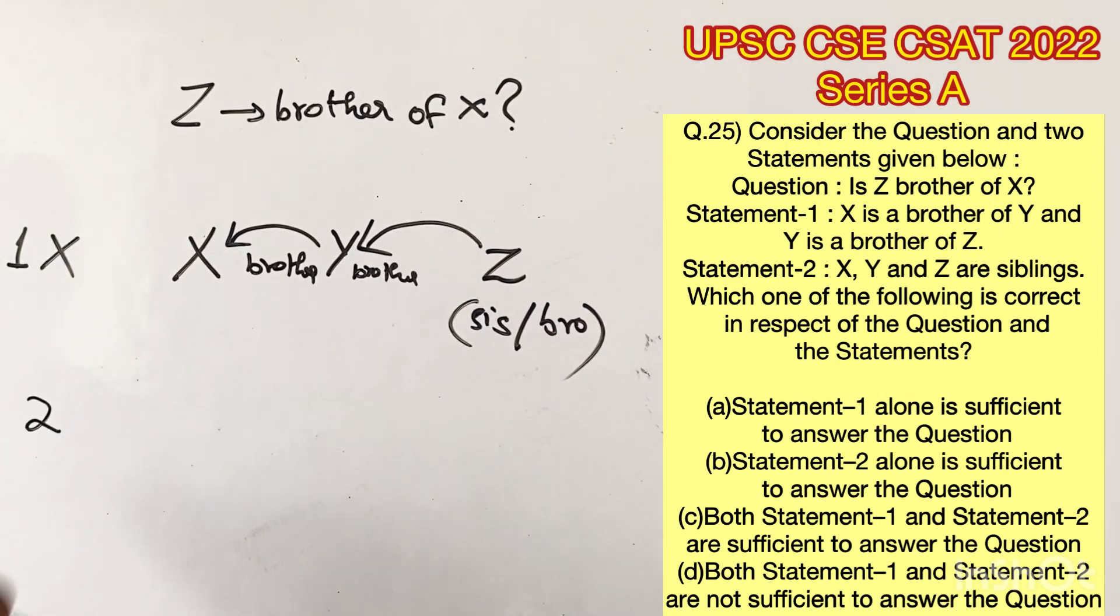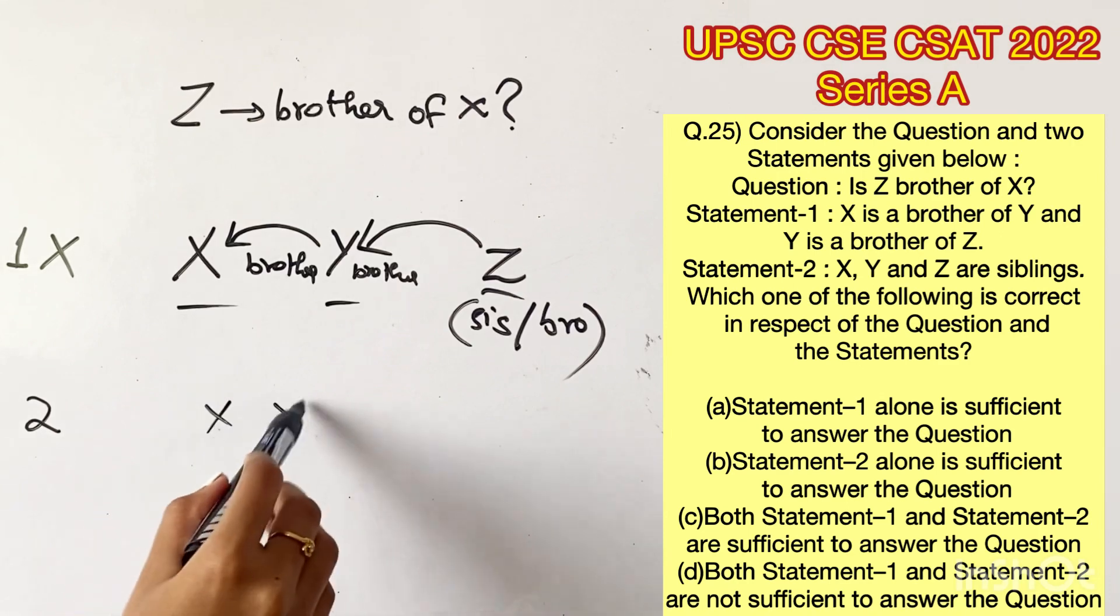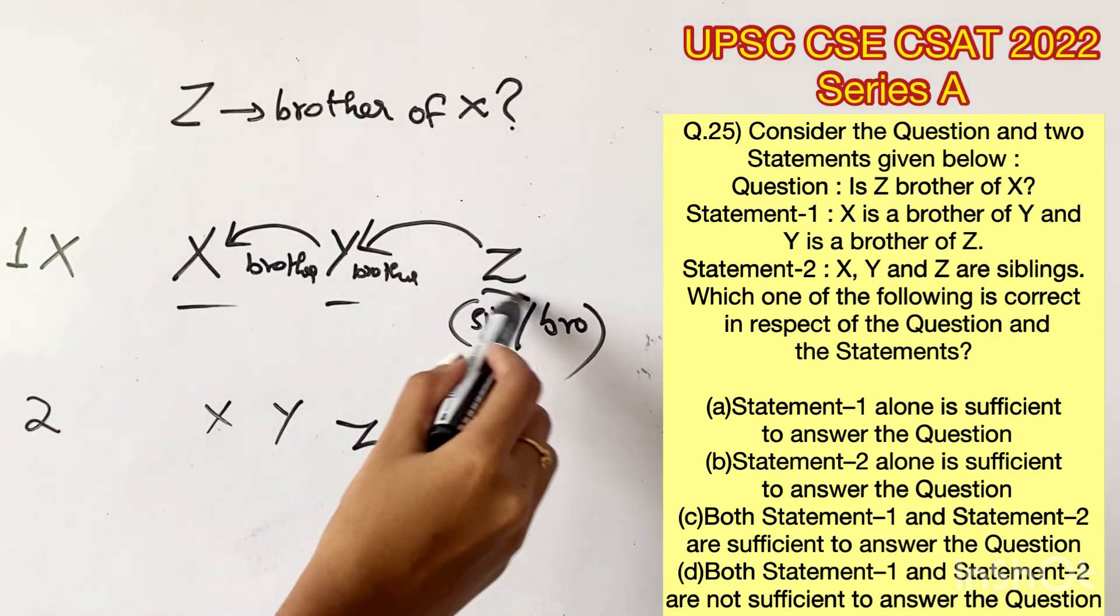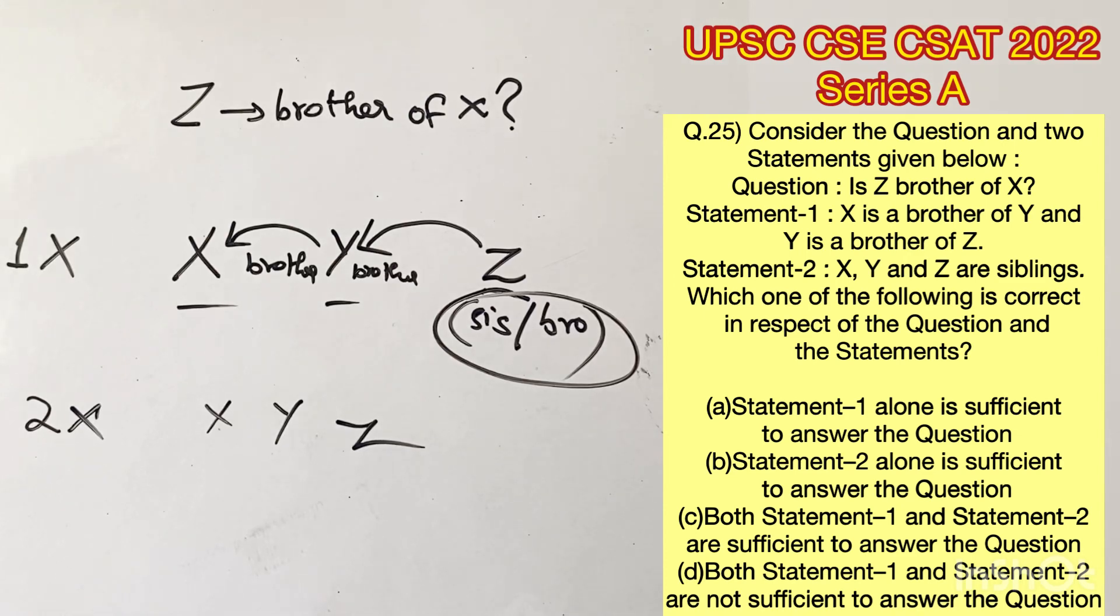Let's move on to statement 2. X, Y and Z are siblings. Now this also does not answer the question if Z is a brother or a sister. So statement 2 is also not sufficient to answer the question.